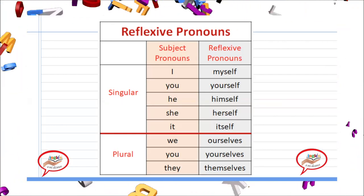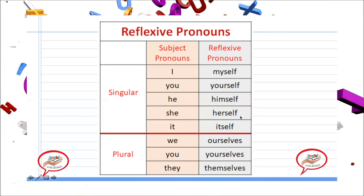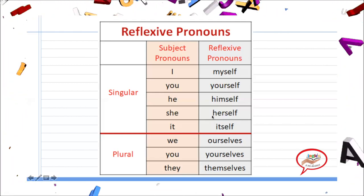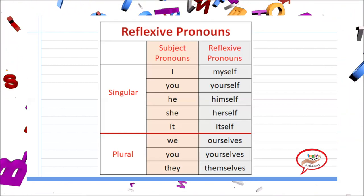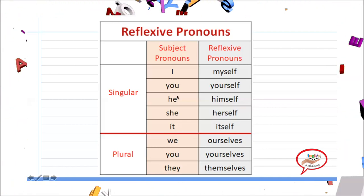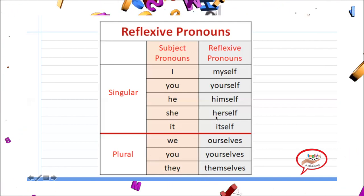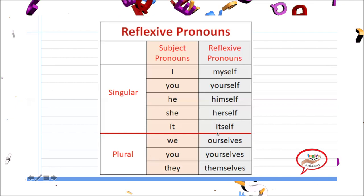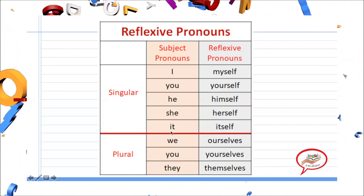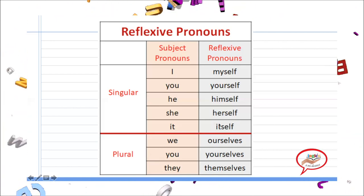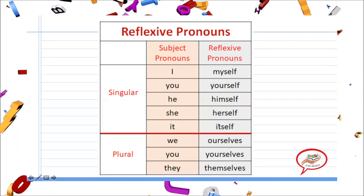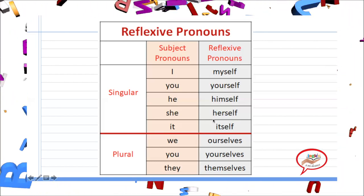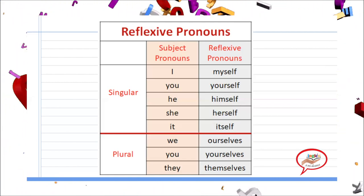Ahora vamos con los que son plural. Ourselves lo vamos a utilizar siempre para referirnos al subject pronoun we. Siempre que escuchemos ourselves en una oración, recordemos que nos estamos incluyendo. Yourselves en plural — pueden ver una gran diferencia: en singular es yourself terminando en F, mientras que en plural es yourselves terminando en VES, aplicando la regla de pluralización. Themselves se va a referir al pronombre they.